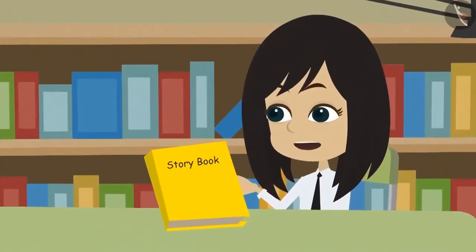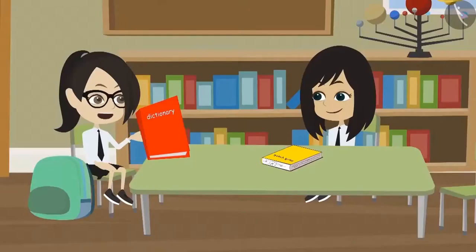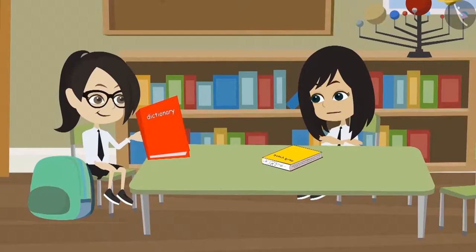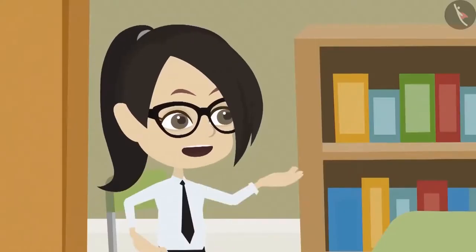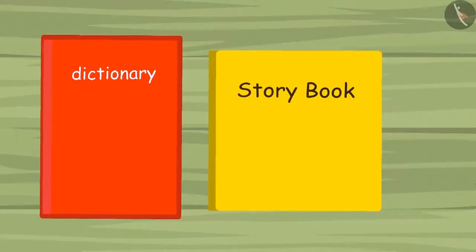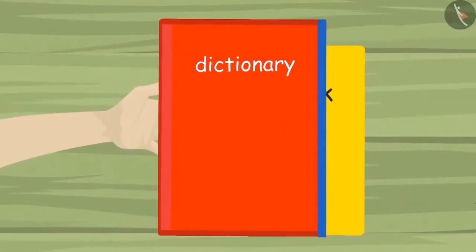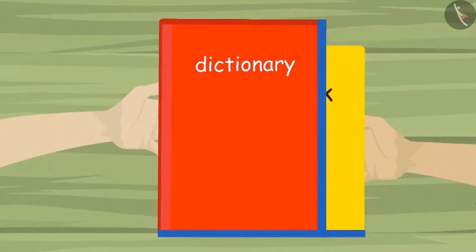Vandana, look, my father has given me this book. Oh, this is a very big book. I too have a big book. See this. It is also a big book, but my book is much bigger. No, I think my book is bigger than yours. Look, my book is bigger than your book. From this side, my book looks much bigger. Oh yes, my book is bigger from one side, and your book is bigger from this side. Then whose book is bigger?